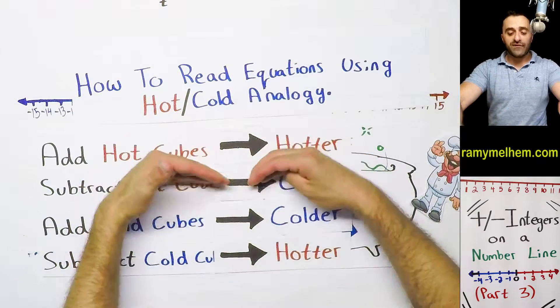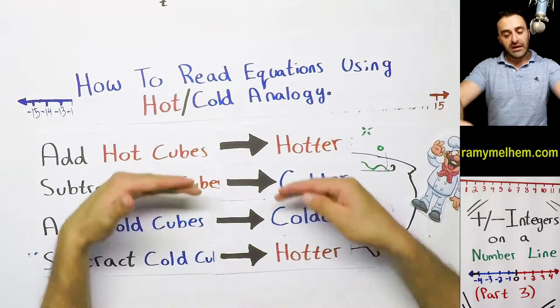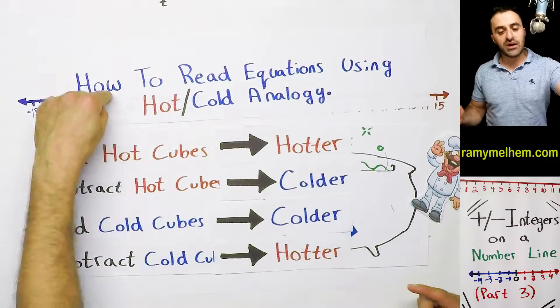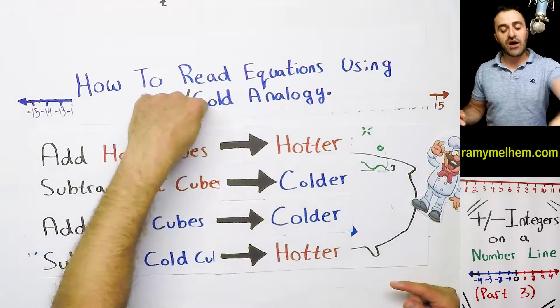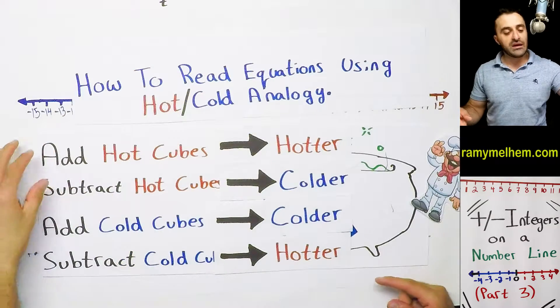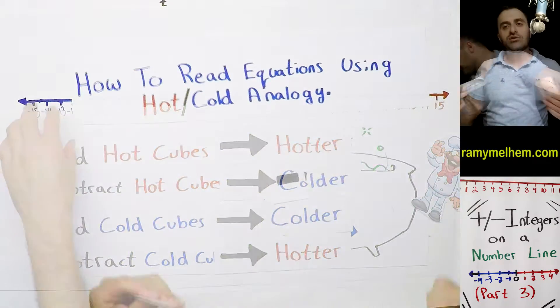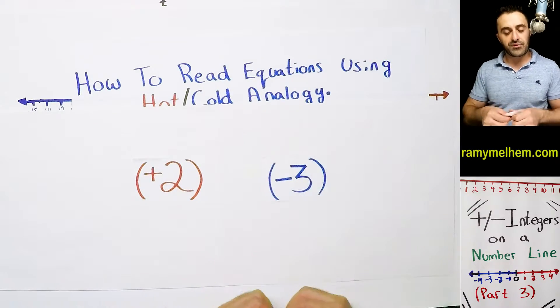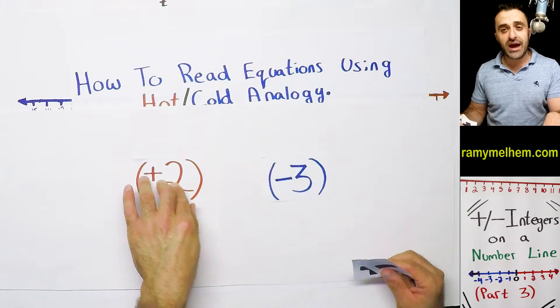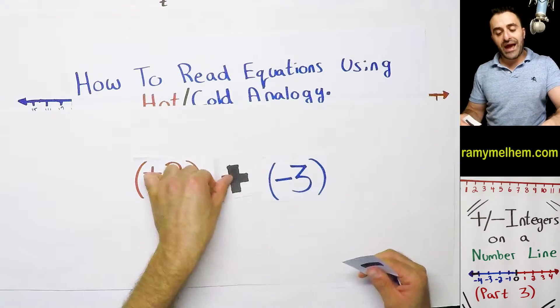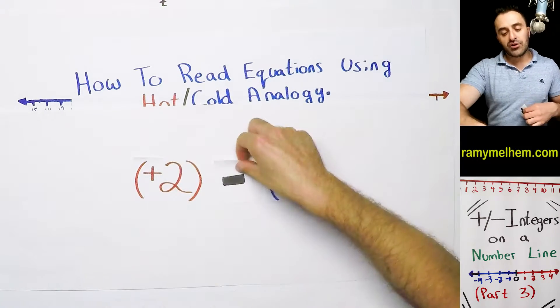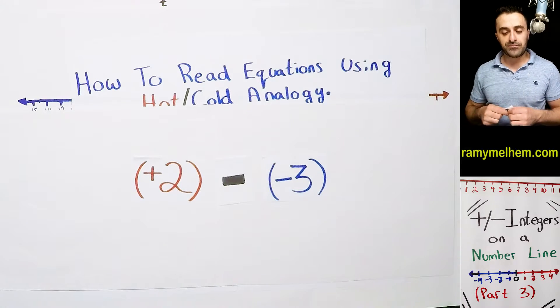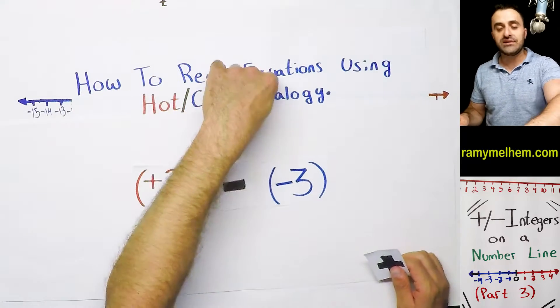Guys, you've got to be very comfortable reading these equations and applying this concept to them. So where's these equations? We've got to learn how to read them. We looked at the hot and cold analogy, but now how do we read these equations? So here's a couple numbers. I've got a positive 2, I've got a negative 3. If you remember, positive numbers were red and negative numbers were blue.